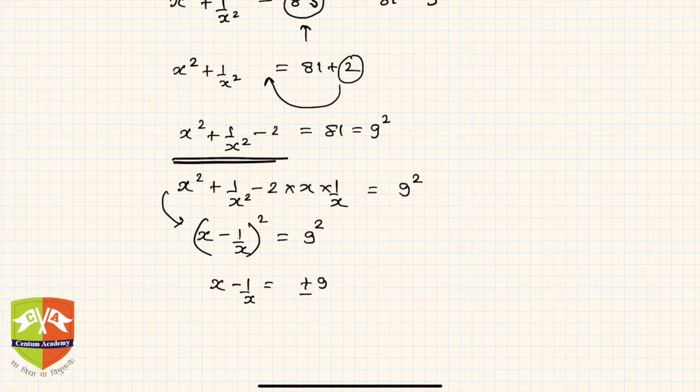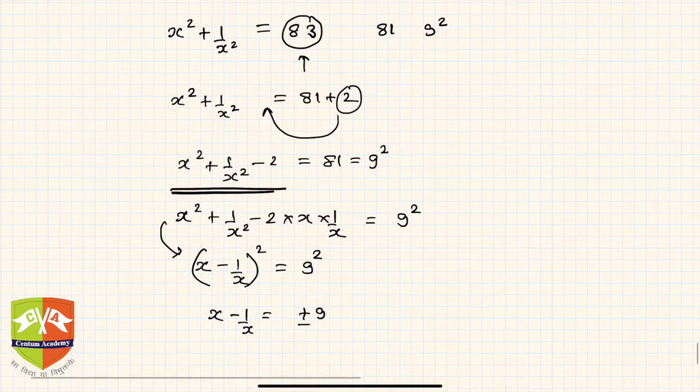So hence I can find out x - 1/x will be nothing but +9 or -9. Both could be the value. So x - 1/x is +9 or -9.